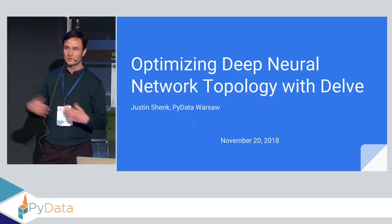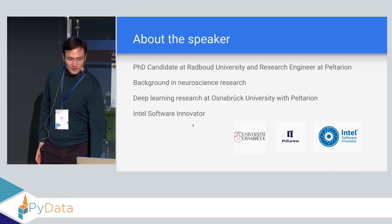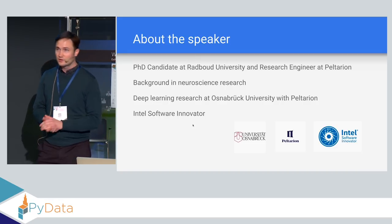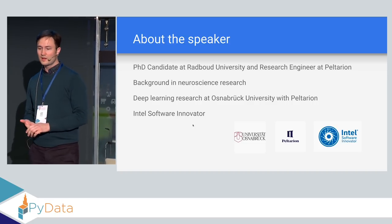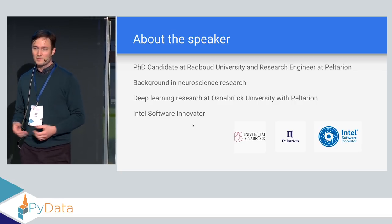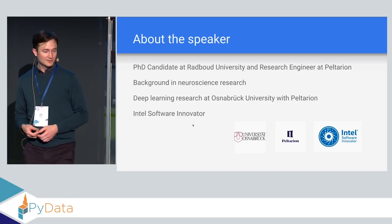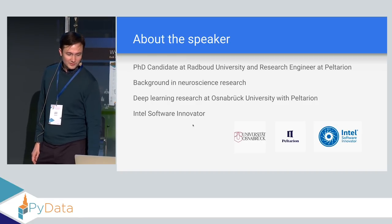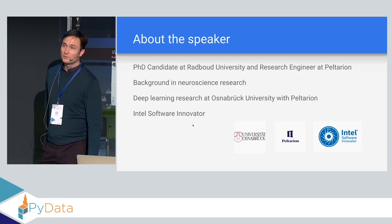Hopefully if you have questions we can talk about that afterwards. About me — my name is Justin Shank, and I'm a PhD candidate at Radboud University in Nijmegen, Netherlands. I'm also a research engineer at Peltarion, based in Stockholm, Sweden. My background is in neuroscience research from Texas, so quite international already.